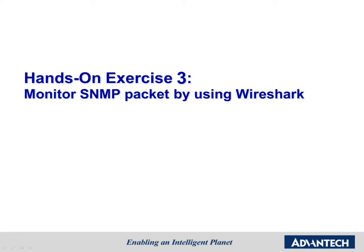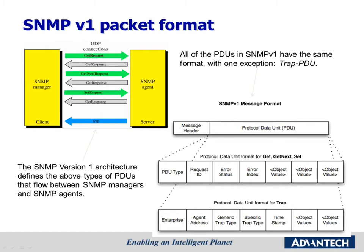Here is the last exercise: monitor SNMP packages using Wireshark. ADAM 6000 series supports SNMPv1 and SNMPv2c, which helps users manage the ADAM 6000 series on the network. Before capturing packages through Wireshark, we have to know the data format of the SNMP protocol. An SNMPv1 message contains two parts: a message header and the Protocol Data Unit, or PDU. There are two kinds of PDU: one is for GET, GET NEXT, and SET, and the second one is for the TRAP message.